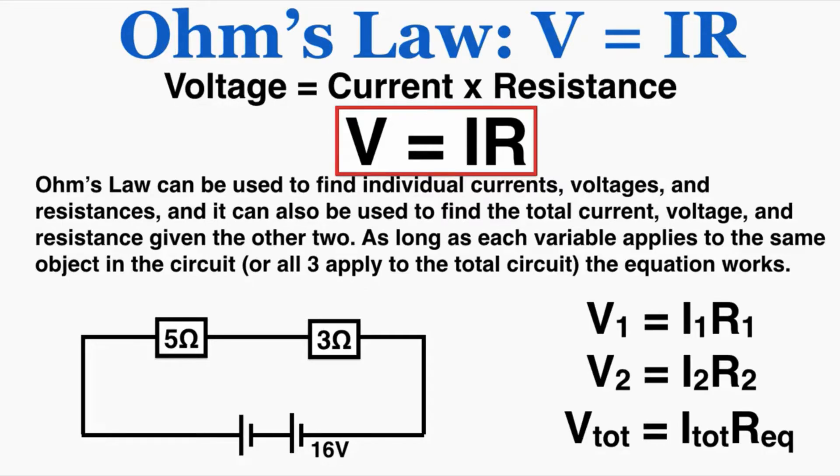So just plugging this in, I'm going to say that I have a current of 2 amps moving around the circuit. So applying V equals IR to each resistor gets me a total voltage of 10 across the first resistor and a voltage of 6 across the second resistor.